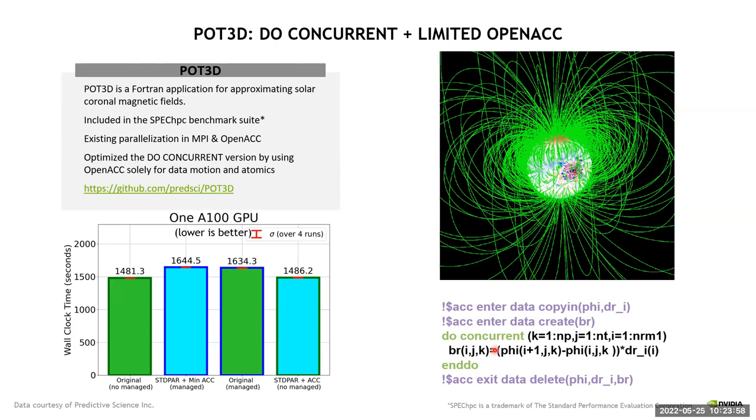Here's a slightly different story. This is a little bit more complex code called POT3D. This is a production application that studies solar coronal magnetic fields. It's also a part of the SPEChpc benchmark suite. And they were happily running in production using MPI plus OpenACC. But as an academic exercise, they went through and replaced all of their OpenACC with do concurrent loops to see what was possible. And so here, this is a lower is better time graph. And the original code here on the left is OpenACC and MPI. The next bar is do concurrent plus MPI. And you can see there's about a 10% performance loss for them.